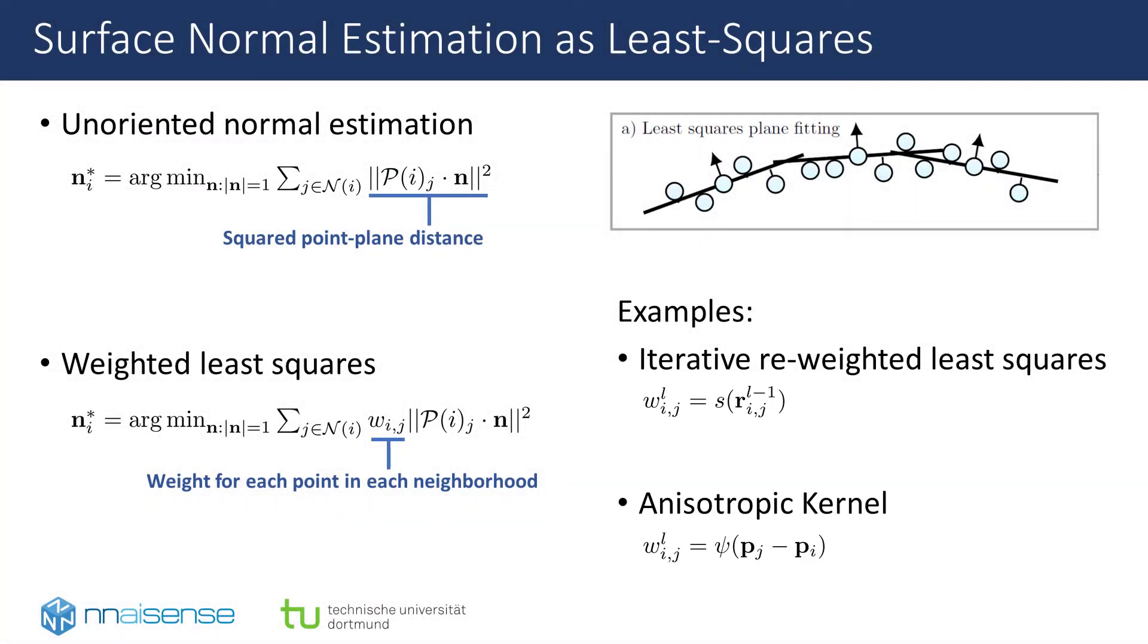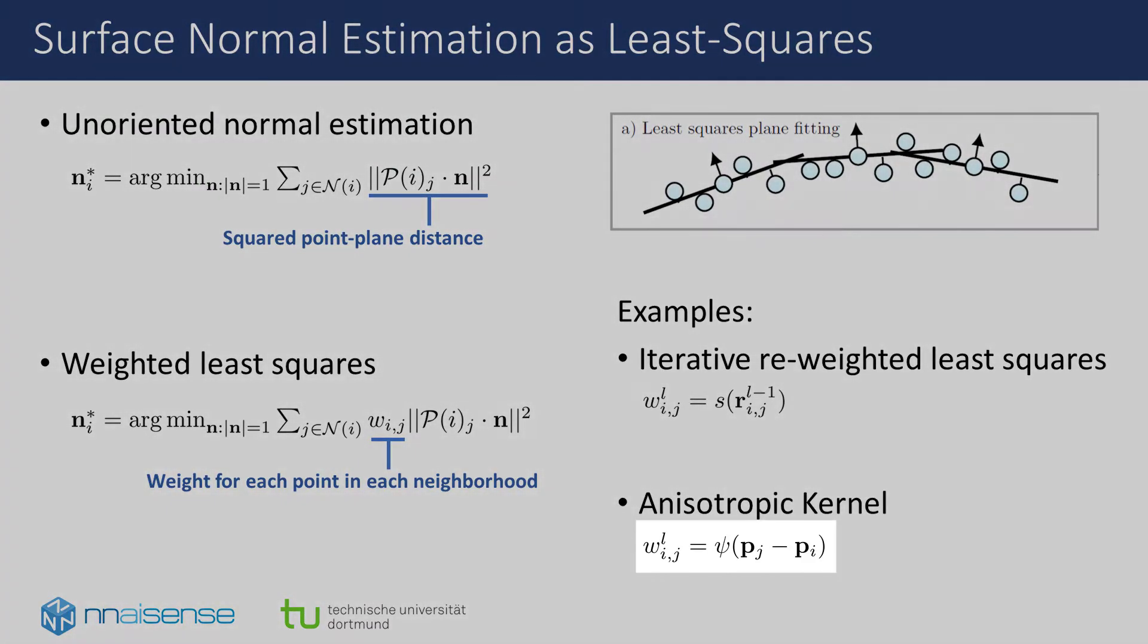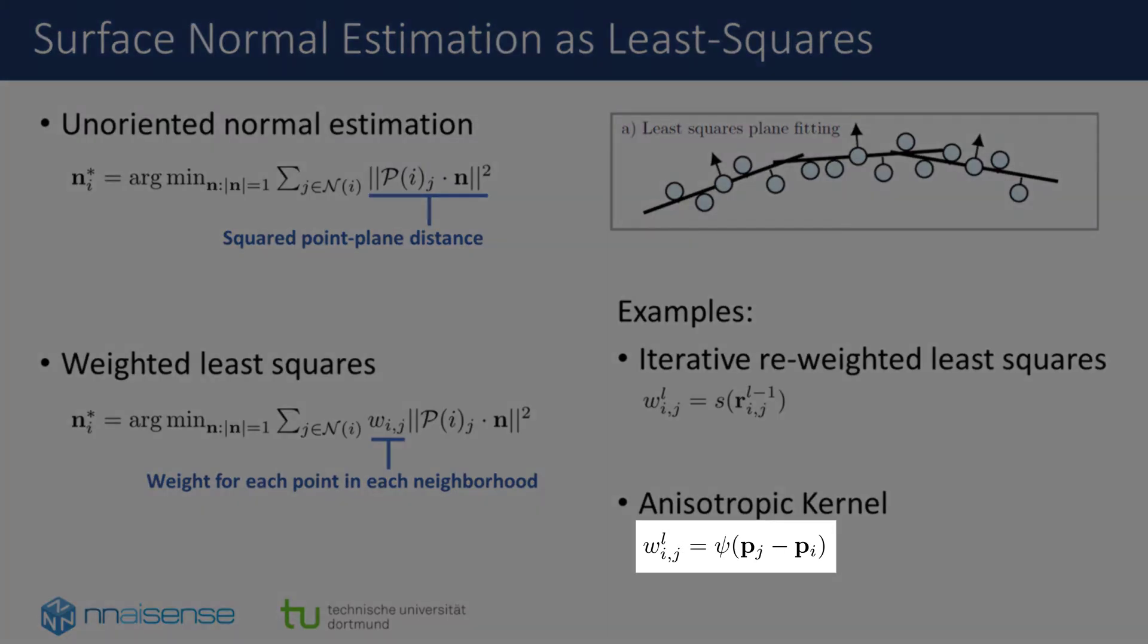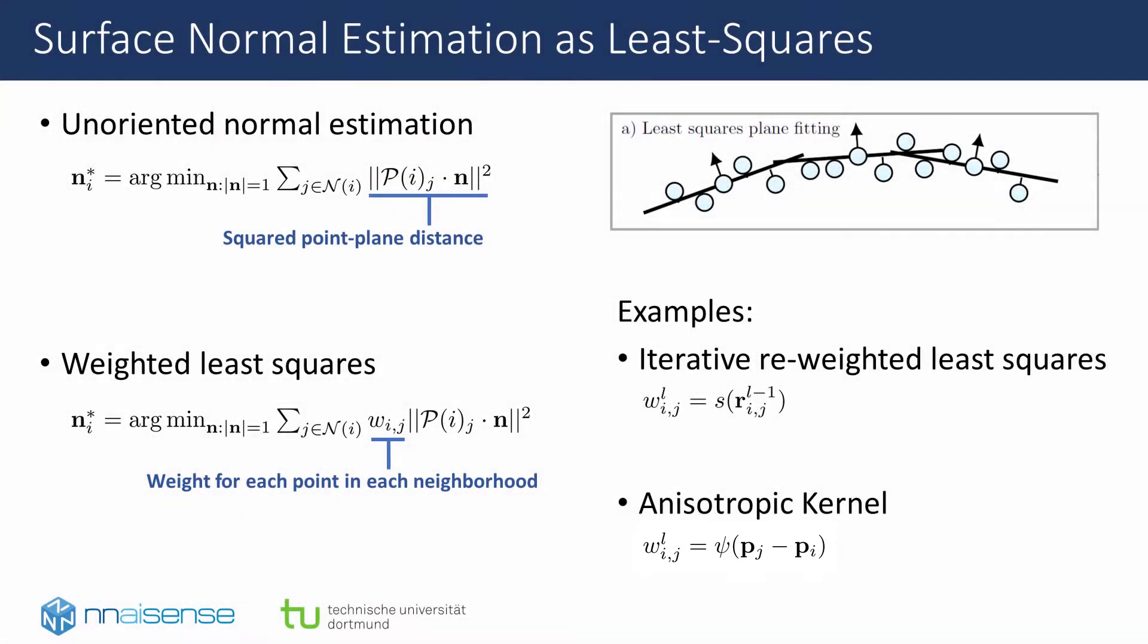For achieving anisotropy, we can introduce a different set of weights coming from an anisotropic kernel function psi that assigns weights to point pairs based on their full Cartesian relation. Here, one has to carefully ensure that the kernel behaves invariant to rigid rotational transformations of the whole neighborhood, so that the resulting normal vectors are equivariant to those transformations.